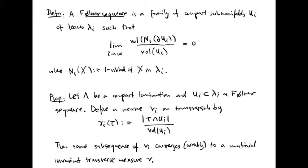Invariant measures are very closely related to the idea of amenability in the theory of groups. We define a Følner sequence to be a family of compact sub-manifolds of leaves of our lamination such that the volume of a neighborhood of the boundary is small compared to the volume of the sub-manifold. Følner sequences give rise to invariant transverse measures.